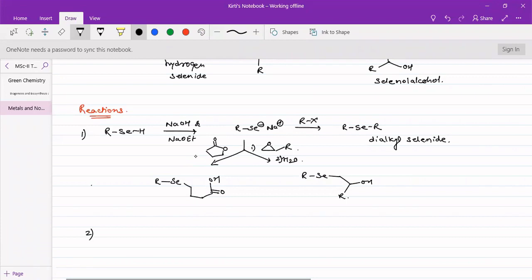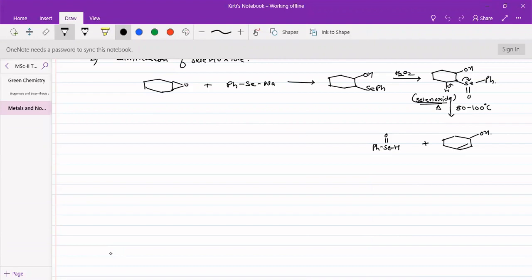Second reaction for this is elimination of selenoxides. In this, what we are doing is the epoxide when reacts with selenium salt will give us this selenol, and then upon oxidation using hydrogen peroxide it will form a selenoxide. This selenoxide undergoes elimination to form selenoxide hydride and we will get an alpha-beta unsaturated alcohol.